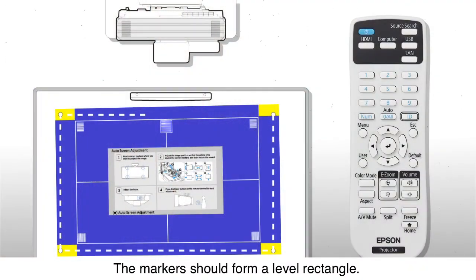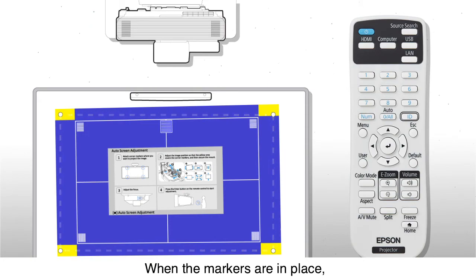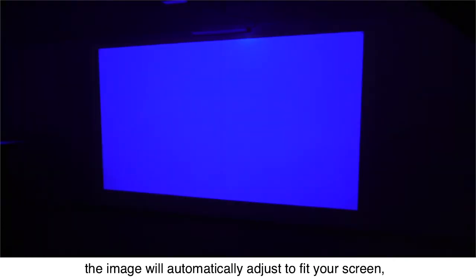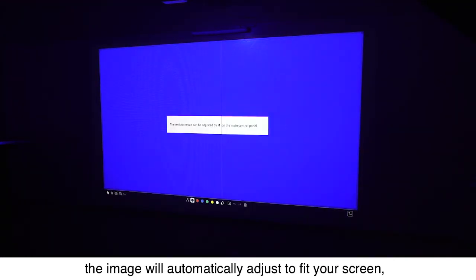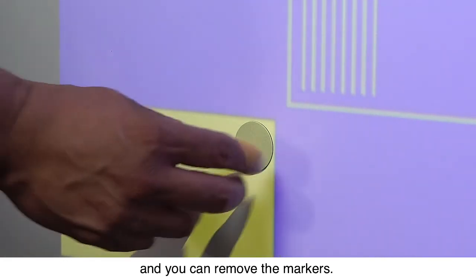The markers should form a level rectangle. When the markers are in place, press enter to finish the process. After a few seconds, the image will automatically adjust to fit your screen and the markers, and you can remove the markers.